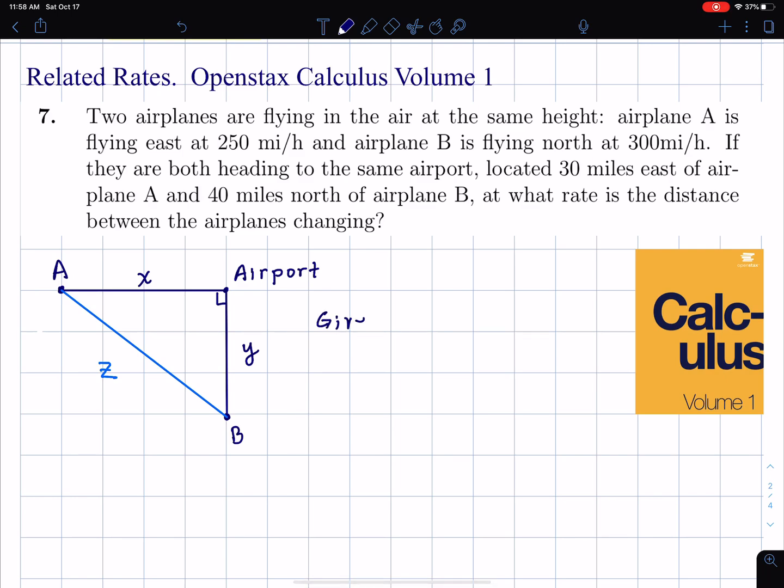We're given the speed of airplanes A and B. I'm going to translate that into calculus language by saying that dx/dt is -250. It's actually negative because x is the length of this right triangle, and x is decreasing. If you left that off, it would lead to the right answer because both x and y are decreasing, but it's good to do it properly.